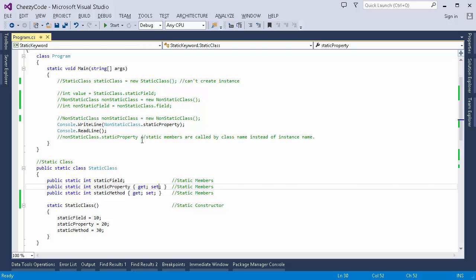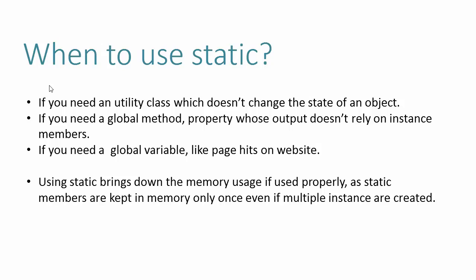So when should we use the static keyword? We can have a static class when we need a utility class that doesn't change the state of an object — like System.Math, which just takes input and returns output. Also, if you need a global method or property whose output doesn't rely on instance members, you can make it static. Or if you want a global variable available to all instances, like the visitor count example, make it static.